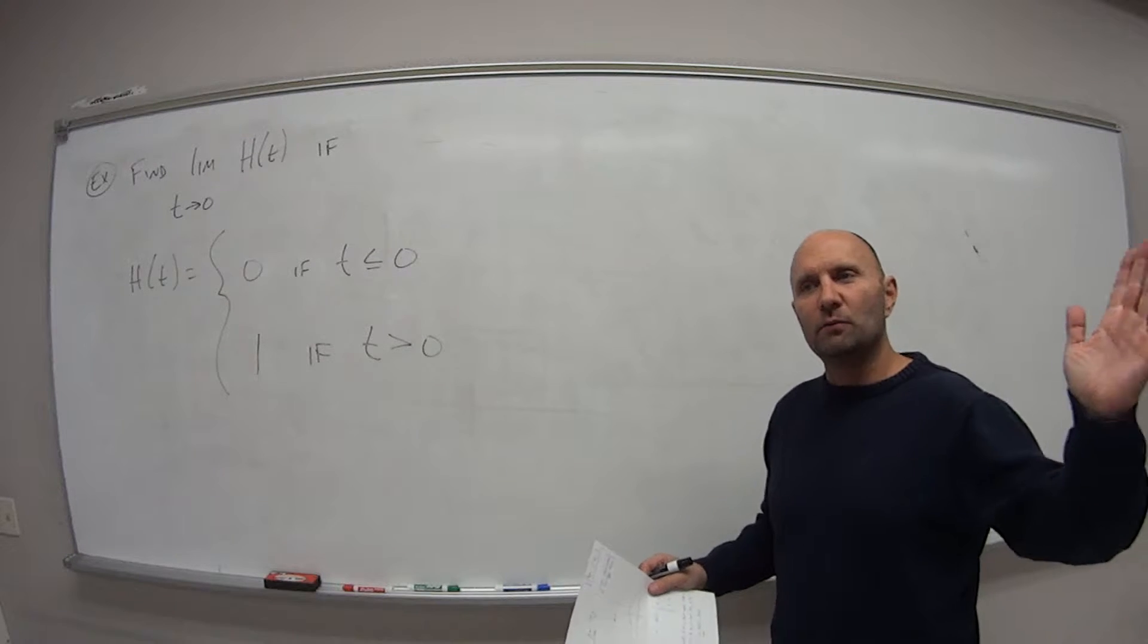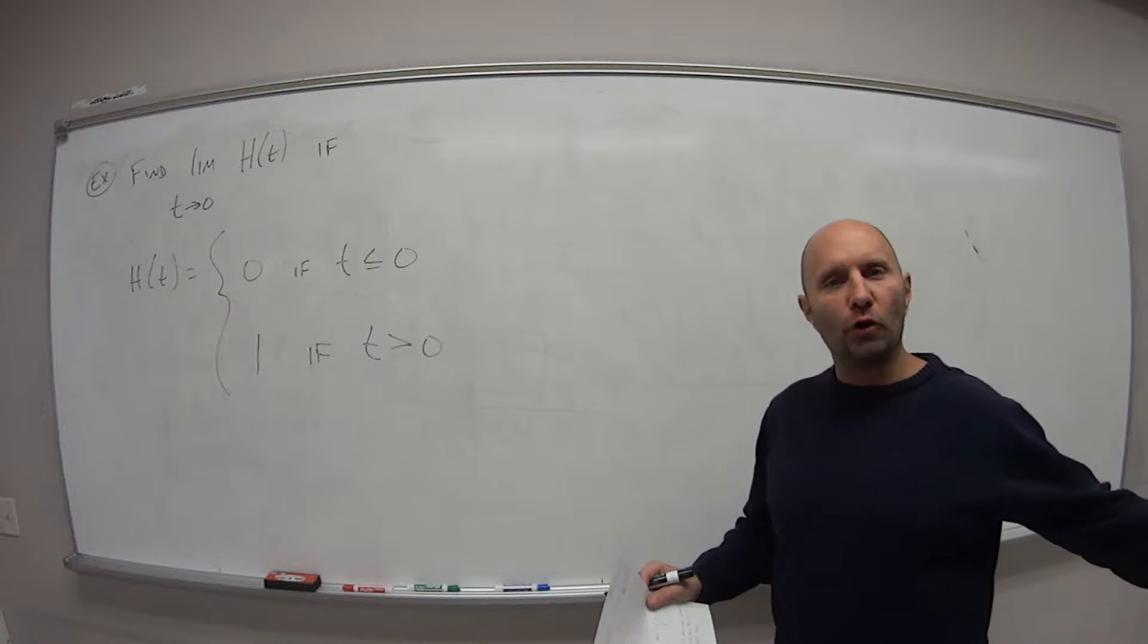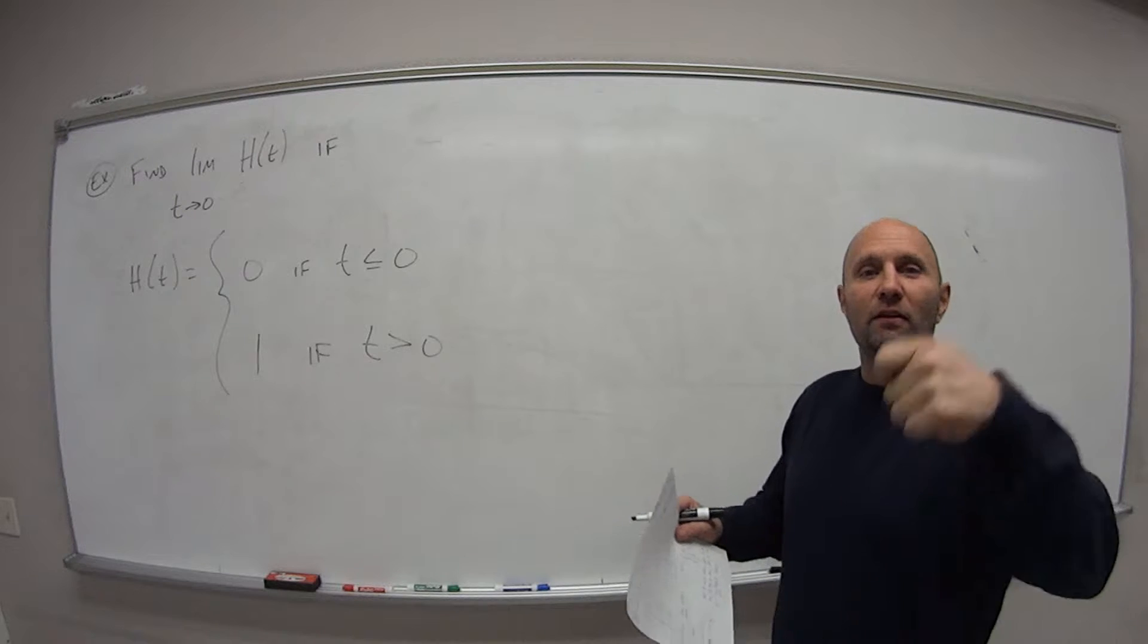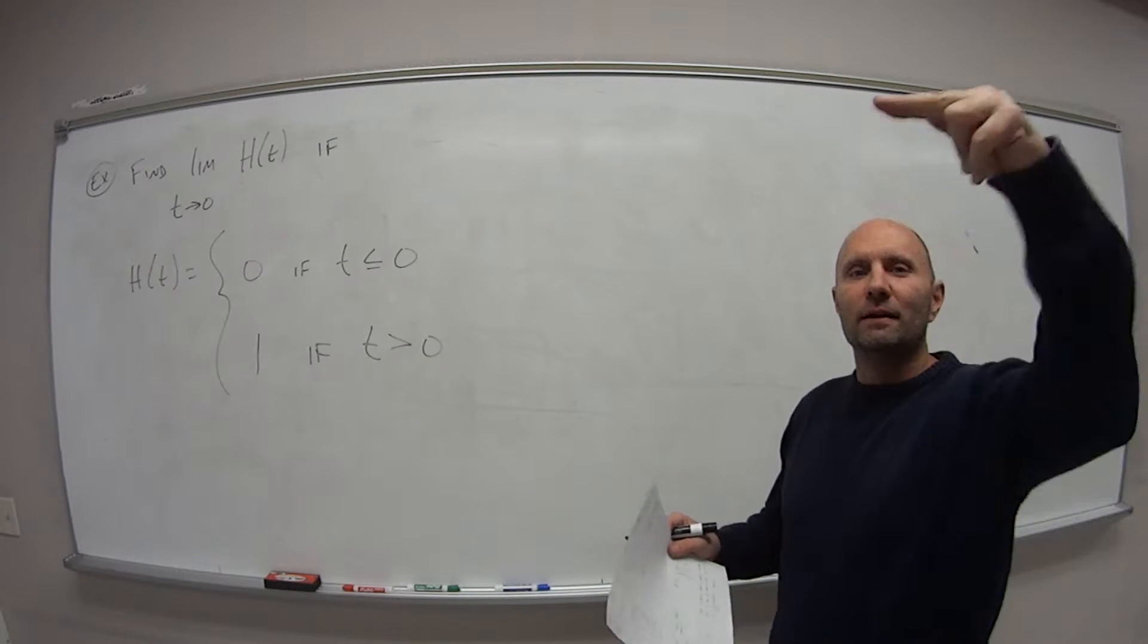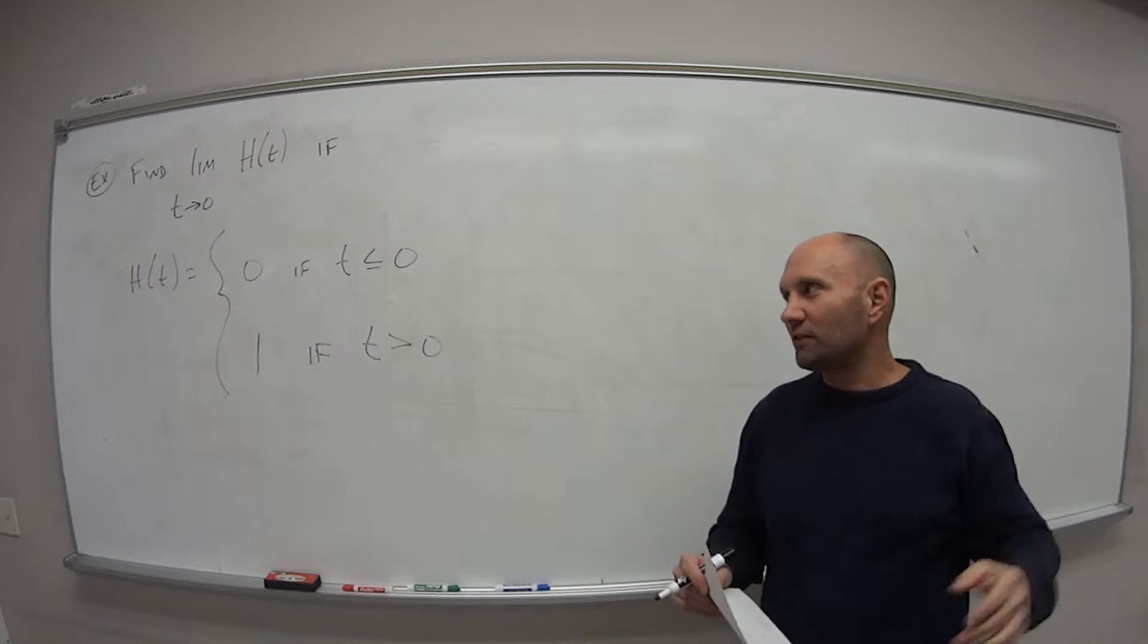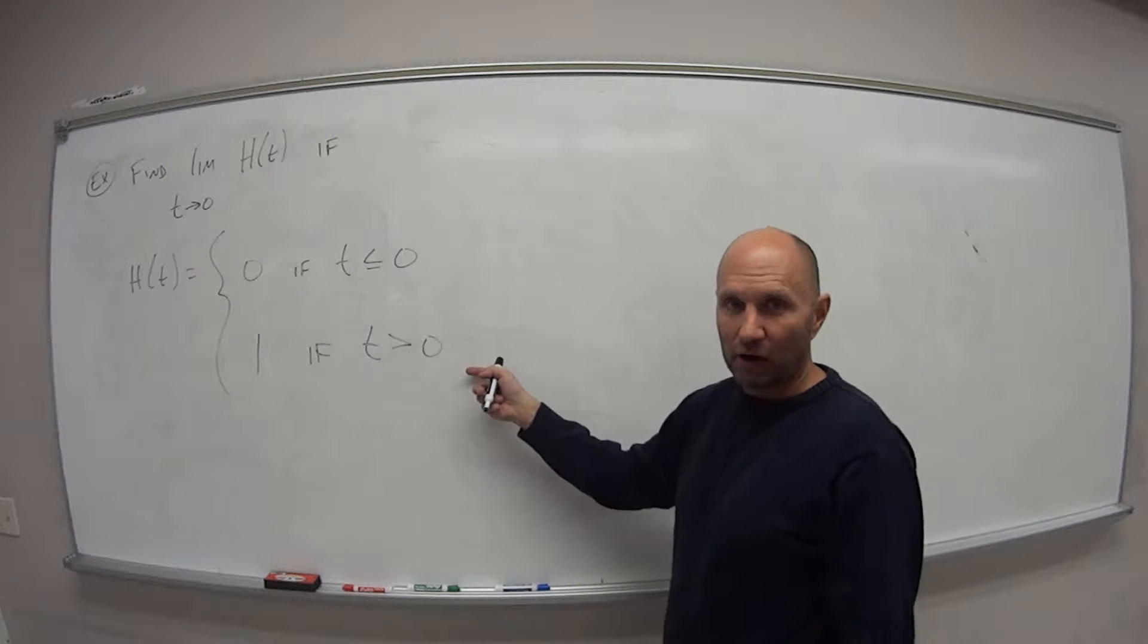If up until time 0, there's no current running through a system, we say that value is 0. And then as soon as, let's say, a light switch is turned on, there's current. It jumps up to positive 1. So it doesn't fluctuate back and forth. It's basically off or on, like a light switch.